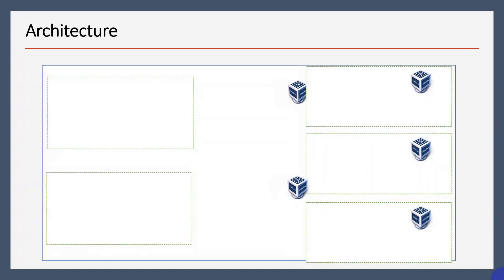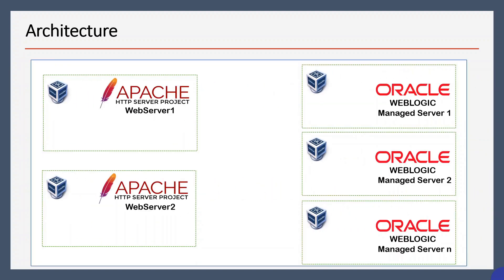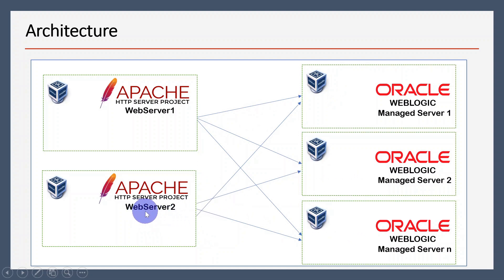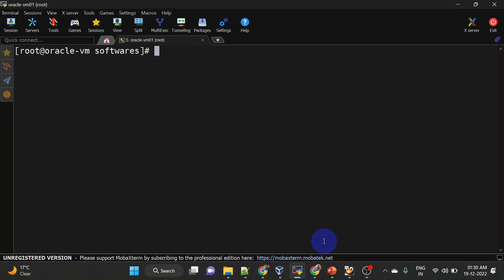Our requirement is that we are running both on the same machine, but the bigger use case is that there can be multiple machines where Apache and WebLogic run on separate machines. Here you can see we have two web servers and each server is connected to different managed servers, so by this we can achieve high availability of web server and managed servers. To install Apache, which is also called as HTTPd web server, we will use the yum command.